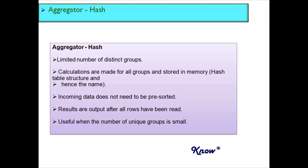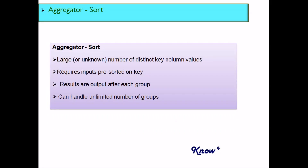When there are multiple grouping keys with many distinct values, that is when you want to use the sort method. With the sort method, you need to pre-sort your input data, which improves performance of the aggregation. Sorting the data is a precondition for this method. It works with an unlimited number of groups or a high number of distinct values. Most of the time the Aggregator is left at its default hash value, but if you have a large number of distinct values, you must use the sort method.